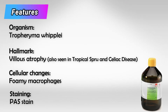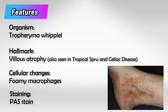Celiac disease can also cause villous atrophy and is characterized by a skin rash because it is an allergic reaction. Similarly, Whipple disease also causes villous atrophy along with skin depigmentation or hyperpigmentation. So both conditions share villous atrophy and skin symptoms.